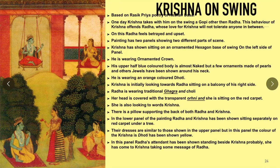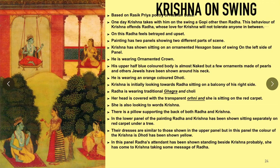One day Krishna takes with him on the swing a gopi other than Radha. This behavior of Krishna offends Radha, whose love for Krishna will not tolerate anyone in between. On this, Radha feels betrayed and upset. The painting has two panels showing two different parts of the scene. On the left side of the upper panel, Krishna is shown sitting on an ornamented hexagon base of the swing.